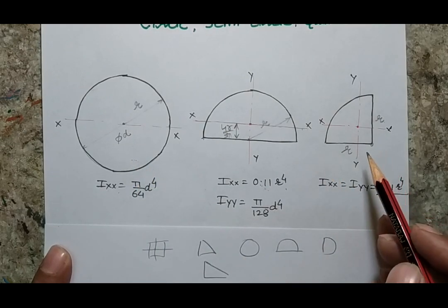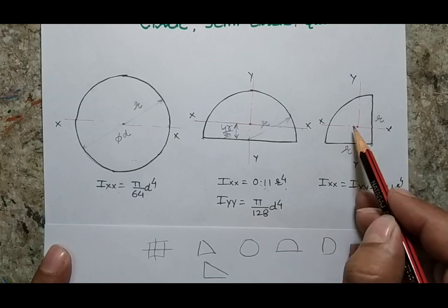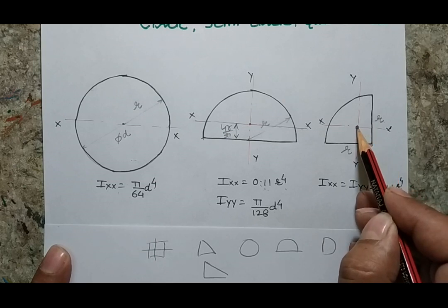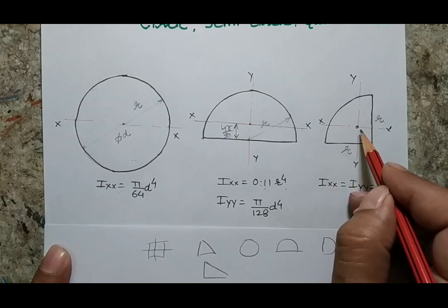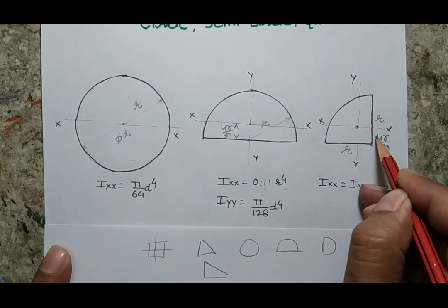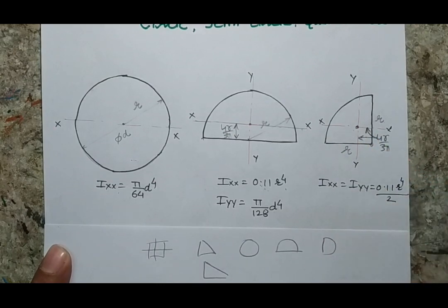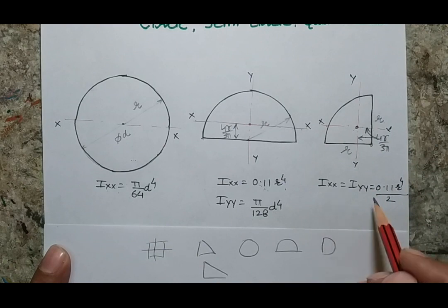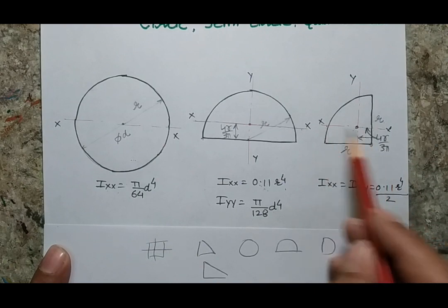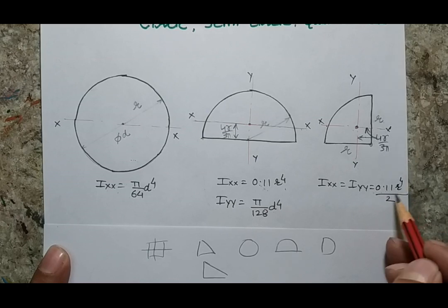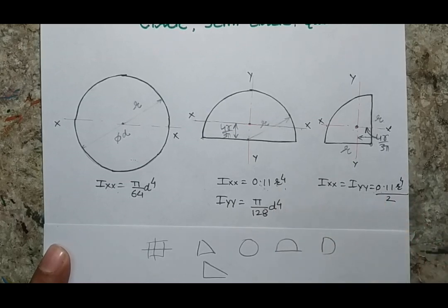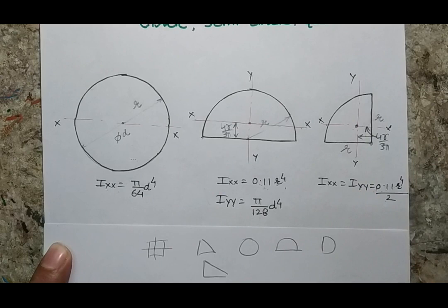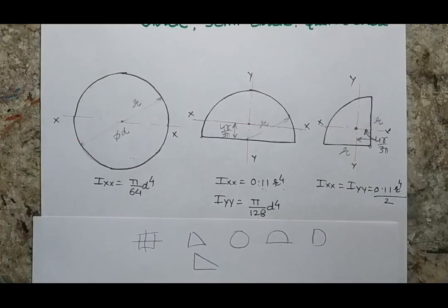Similarly, when we talk about the moment of area of a quarter circle, the centroid lies at a distance of 4r/3π from both flat sides. Both these distances are 4r/3π, and these are the centroidal axes. The centroidal moment of area is 0.11r⁴, which is just half of the semicircle value. The objective of this session is to derive these values, which will also help us solve further problems.